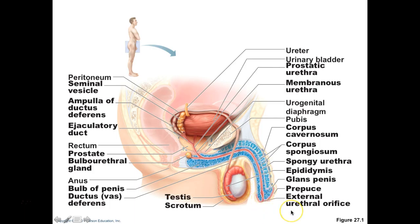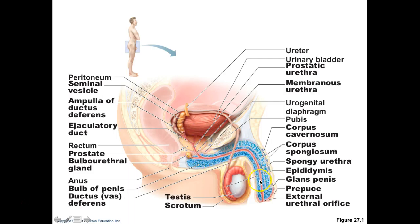The urethra exits through the external urethral orifice. As we mentioned in the urinary system, the male uses his urethra for both the reproductive system — to let semen out — and the urinary system — to let urine out. The urine drains through the prostatic urethra and moves out through the spongy urethra as well.